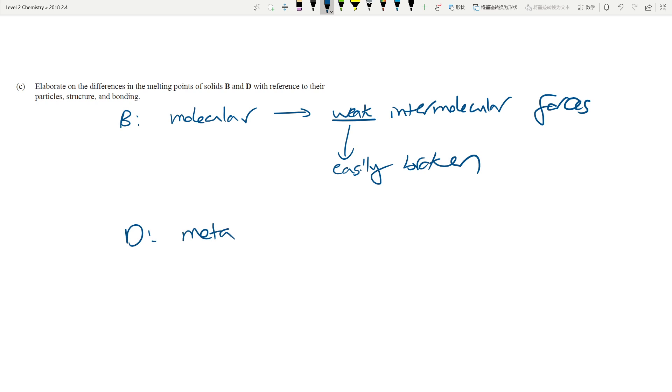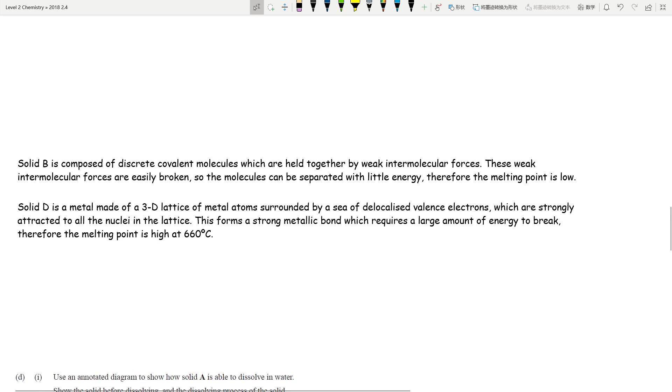If you look at D, which is a metallic bonding, metallic type of solid, which is held together by metallic bonds. And then you can talk about what metallic bond is, which is just the metal atom surrounded by a sea of delocalized electrons. And that force of attraction is really strong. And therefore, it is going to be quite difficult to break the bonds. Hence, you need a large amount of energy. Now for these questions, it really just comes down to just learning all these things by heart. Discrete covalent molecules, molecular solid, weak intermolecular forces, really easily broken. So they can be separated with a little energy. Hence, the melting point is low. When you have solid D, that's made of 3D lattice, surrounded by sea delocalized electrons, which is a very strong force of attraction. So you need to give it a large amount of energy to break the bonds. Hence, a high melting point.